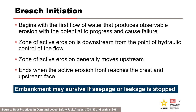The breach initiation phase begins with the first flow of water over or through the dam, levee, or foundation, producing observable erosion with the potential to progress and cause failure. During the breach initiation phase, the zone of active erosion is downstream from the point of hydraulic control of the flow, so outflow rate changes only in response to changes in the driving hydraulic head, not as a result of erosion. As breach initiation proceeds, the zone of active erosion generally moves upstream via headcut or surface erosion during overtopping flow. The breach initiation phase ends when the active erosion front reaches the crest or upstream face of the dam, thereby producing a rapidly accelerating breach outflow and typically unstoppable failure.